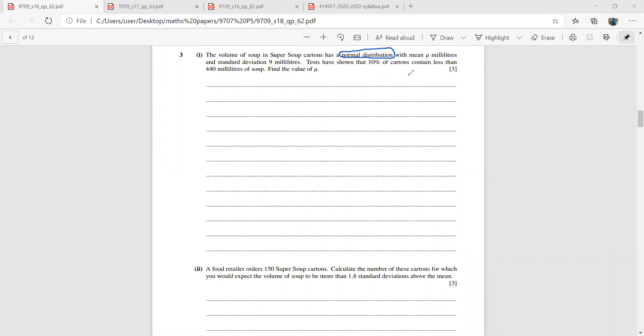10 percent of cartons contain less than 440 ml of soup. Find the value of mu. So we shall start by saying X is normally distributed with the mean mu and the standard deviation is 9, so I'll be writing it as 9 squared because we have to mention the variance here.